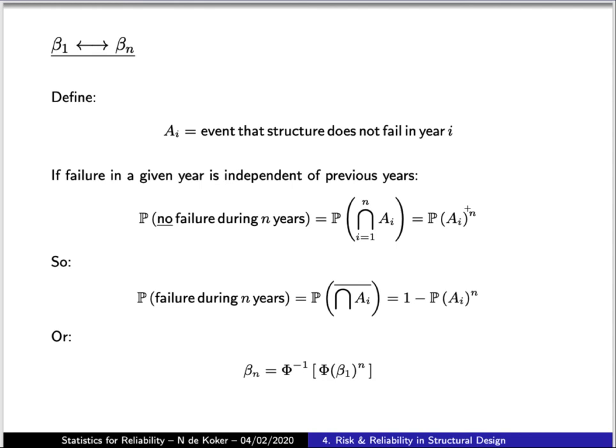So in that sense then the probability of failure during n years is just a complement of the event of no failure occurring which we denote with this over line and that is 1 minus the probability of no failure occurring. So we can express the probability of failure during its lifetime in terms of the probability of not failing in a given year and let me remind you that this is equal to 1 minus the probability of failure during a given year.